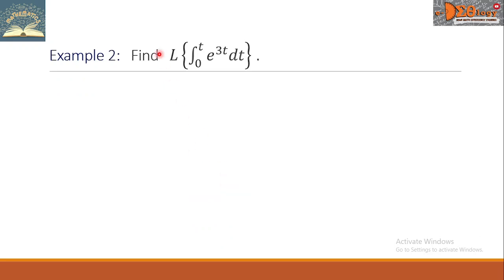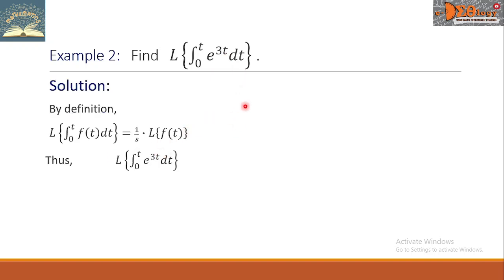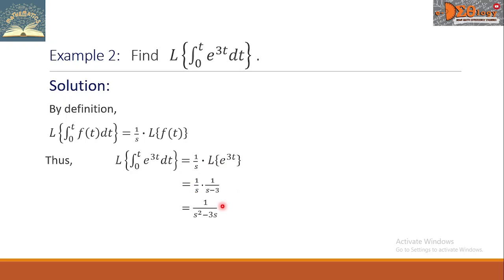Example 2: Find the Laplace transform of the definite integral from 0 to t of e raised to 3t dt. Using the definition, this is equal to 1 over s times the Laplace transform of e raised to 3t. The Laplace transform of e raised to 3t is 1 over s minus 3. Combining 1 over s and 1 over s minus 3, we get the final answer: 1 over s squared minus 3s.